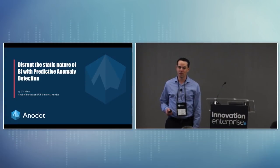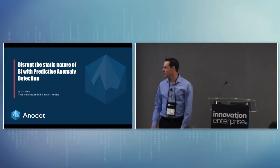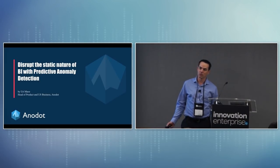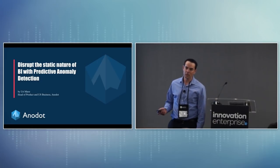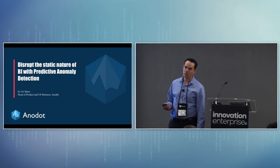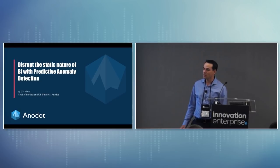Anodot is a company that delivers real-time business insight through anomaly detection. Today I will talk about anomaly detection: why we need it, what it is, how we gain real-time business insight using it, and what steps you need to implement such a system. But before all of that, let's understand what the problem is.